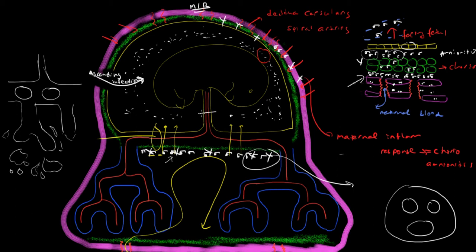If we look at a section through the umbilical cord, here are the fetal arteries and this is the fetal vein. What we start to see are fetal neutrophils — I'll draw those in green — fetal neutrophils start to line up along first the vein and then the artery, and then they actually get into the muscularis of the vessels. At that point, when the fetal neutrophils have gone beyond the intima and into the muscularis, this is what we call a fetal vascular response.